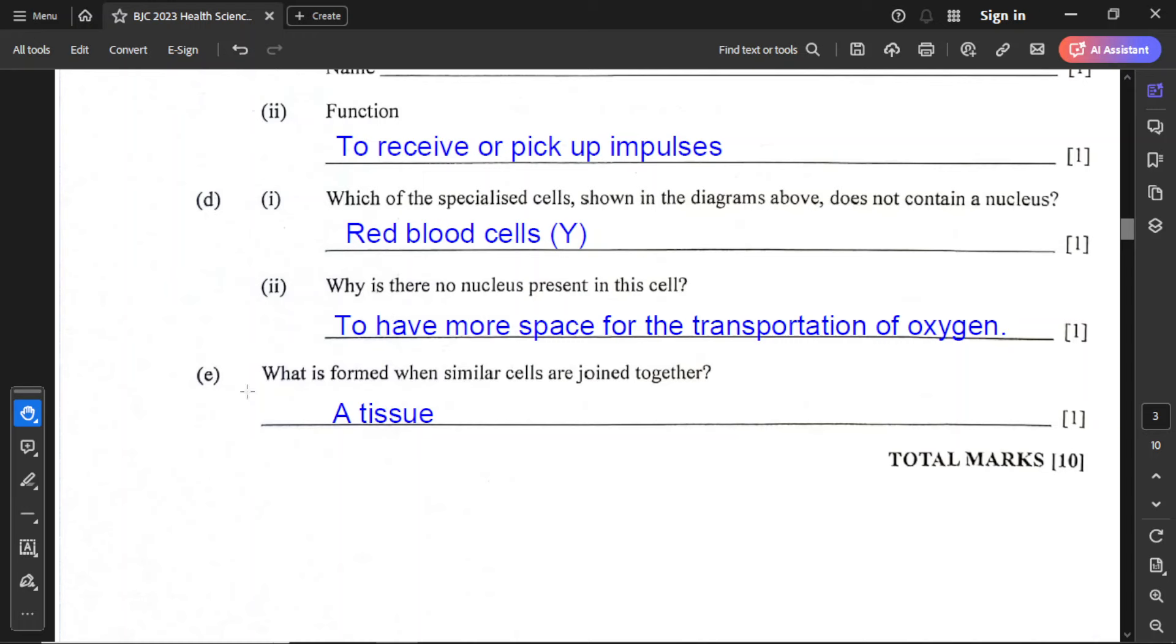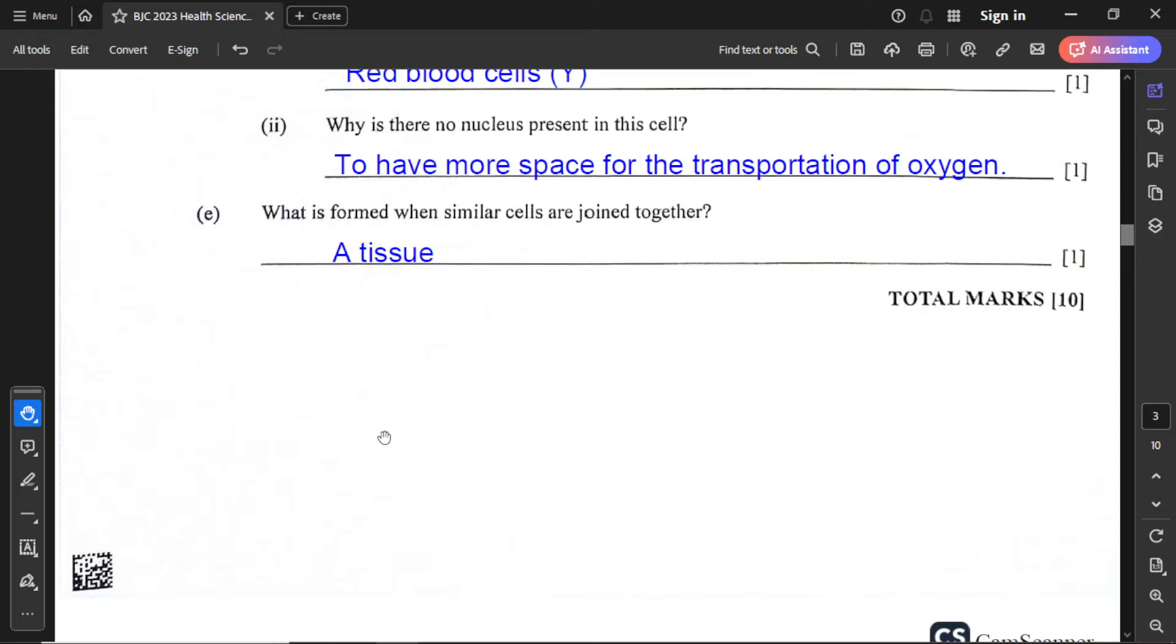Part D2 asks why is there no nucleus present in this cell? One of the main reasons is to create more space to transport oxygen or for the transportation of oxygen. For part E, the last part of this question, what is formed when similar cells are joined together? That is a tissue. When cells combine, you get tissue. If you have tissue combined, you get organs. Organs come together to give you organ systems, and systems work together to build up the organism.